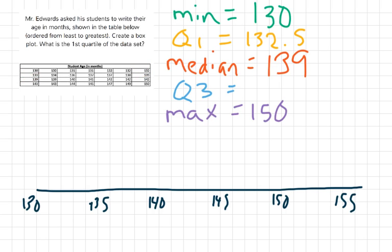And then finally, we're going to find the third quartile, which is going to be in the middle of the upper half of the data here. So starting from 139 here, all the way to the maximum, the middle value will be between 142 and 143. So it'll be 142.5.